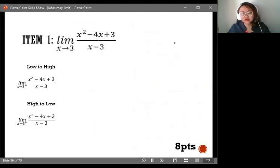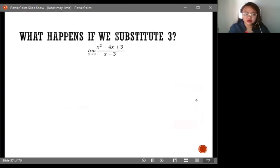This is item number 1 of your LAS. And if you would check your LAS, which was supposedly submitted last week, you will be able to get the value 2 here using tables and graphs. But what will happen if you do direct substitution? What happens if we substitute 3 here? Try it. Let's try it together.